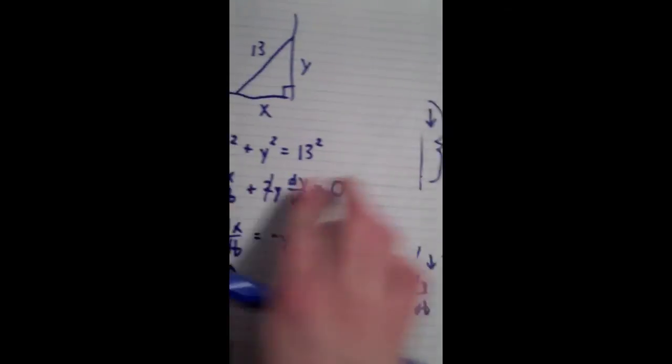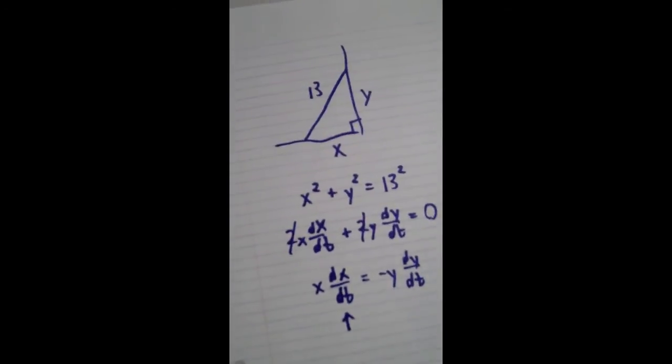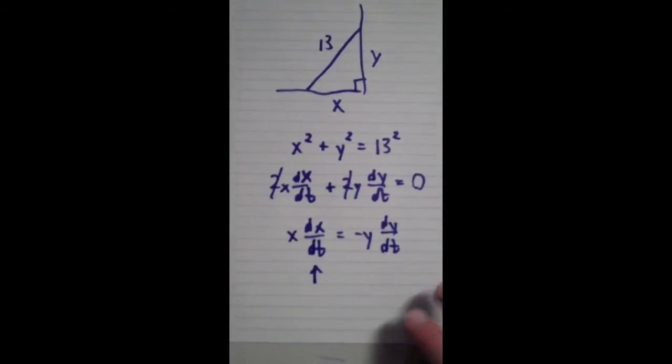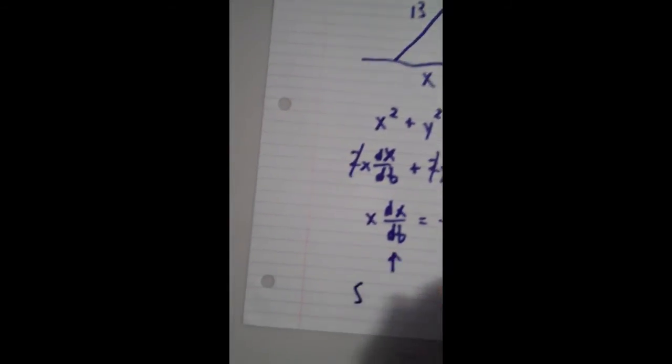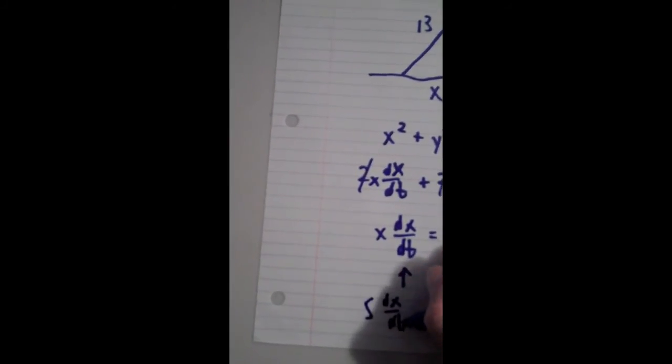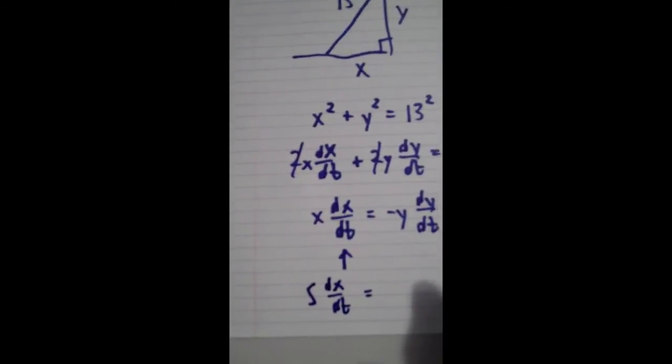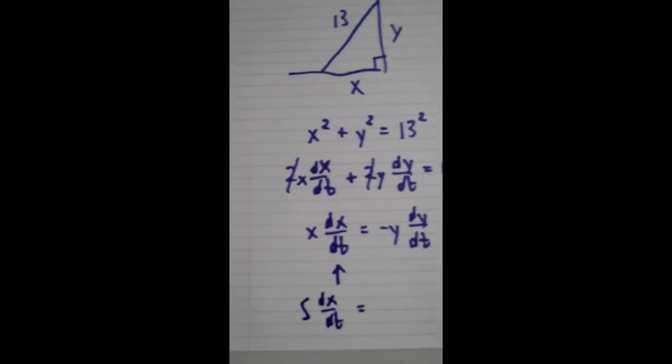So getting back to our original equation, or the equation that we'd solved for, rather. We've got x dx/dt equals negative y dy/dt. So x is 5. dx/dt is what we're solving for. That's equal to y we just found out is 12.